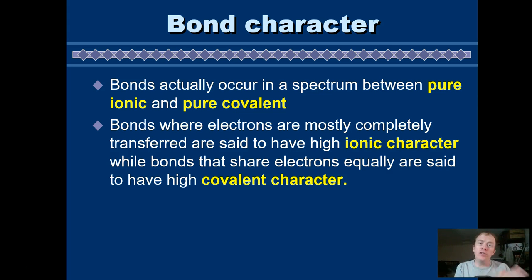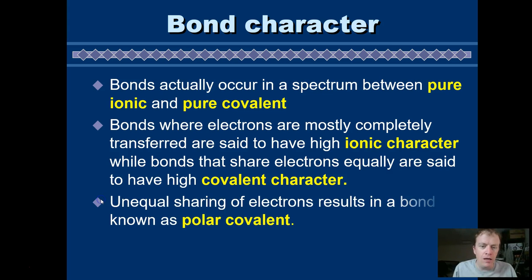And we call it the bond character. It's the difference between electrons being transferred or shared. Situations where there's mostly complete transference of electrons, we say that bond has a lot of ionic character. Or where there's a lot of sharing or complete equal sharing, we call that a high covalent character. But what can happen is we can have some sharing and some unequal sharing.